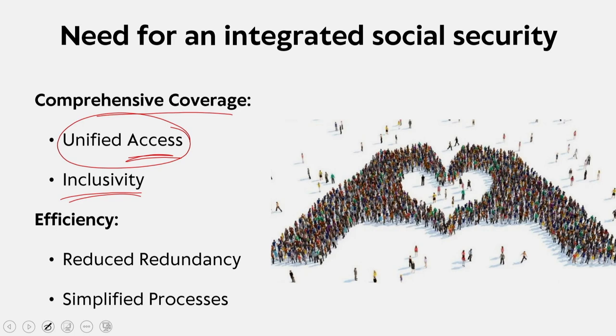When you talk about efficiency, there should be reduced redundancy. You have to streamline different programs into a single system, reducing administrative cost and redundancy. There should also be an approach to facilitate or make it easier for beneficiaries to understand and navigate the system, leading to better utilization. A simplified process would be a one-shot solution for bringing a certain efficiency to the system.